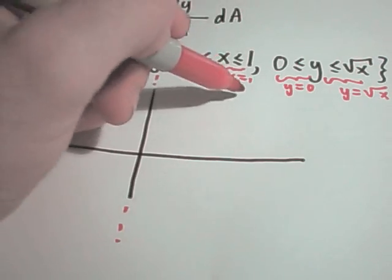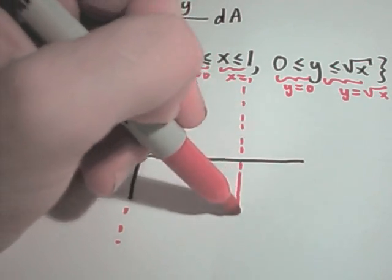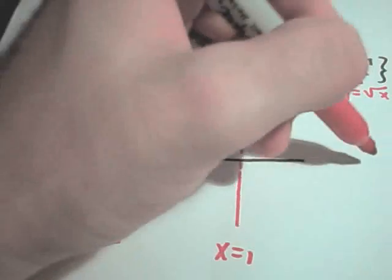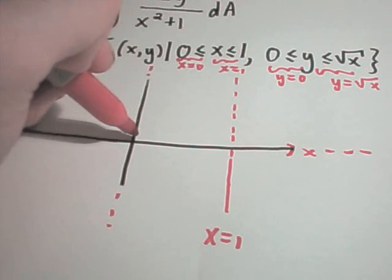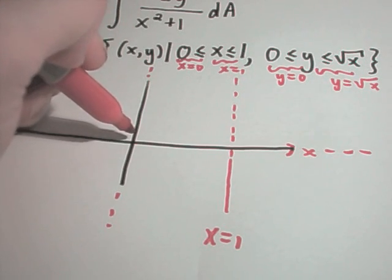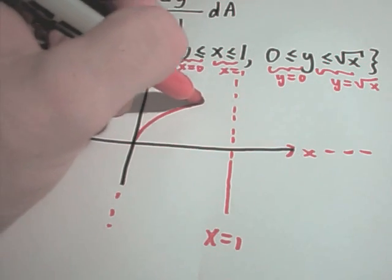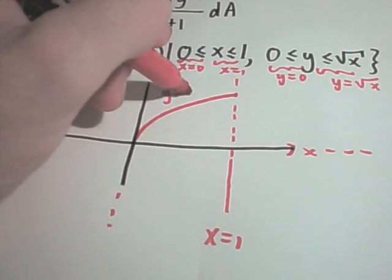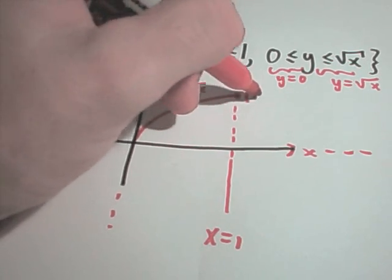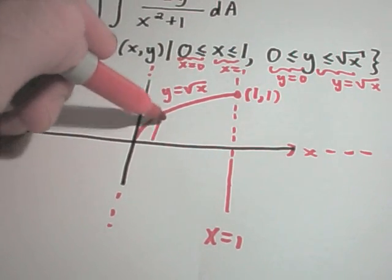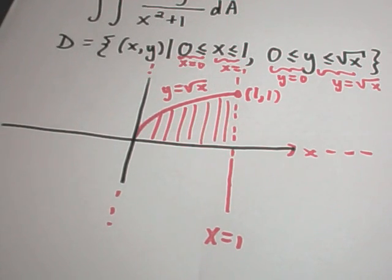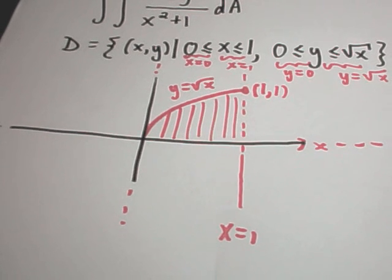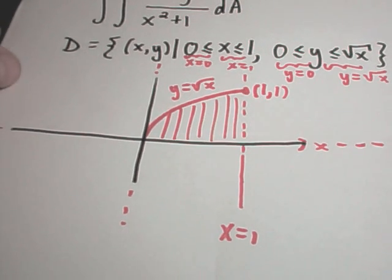x equals 0 is just a vertical line, x equals 1 is just a vertical line, y equals 0 corresponds to the x-axis, and y equals square root of x is just our square root function. So here's y equals square root of x, and they're talking about the region bounded by all these curves — the stuff inside. To set up your limits of integration, it's pretty similar to finding areas between curves.